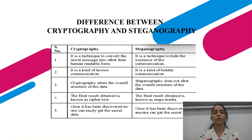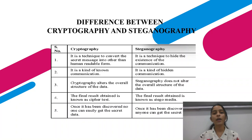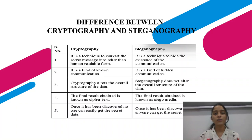Now we'll see the difference between cryptography and steganography. Cryptography is a technique to convert a secret message into an unreadable form — converting plain text into cipher text. In steganography, we are not changing the message; we are just hiding it behind a cover image. Cryptography is a kind of known communication, while steganography is a kind of hidden communication. Cryptography alters the overall structure of the data, while steganography does not. The final result in cryptography is called cipher text, and in steganography it is called stego media.